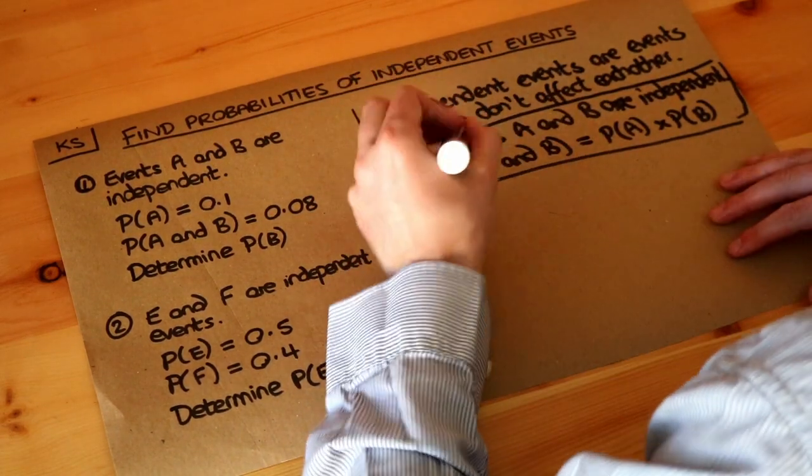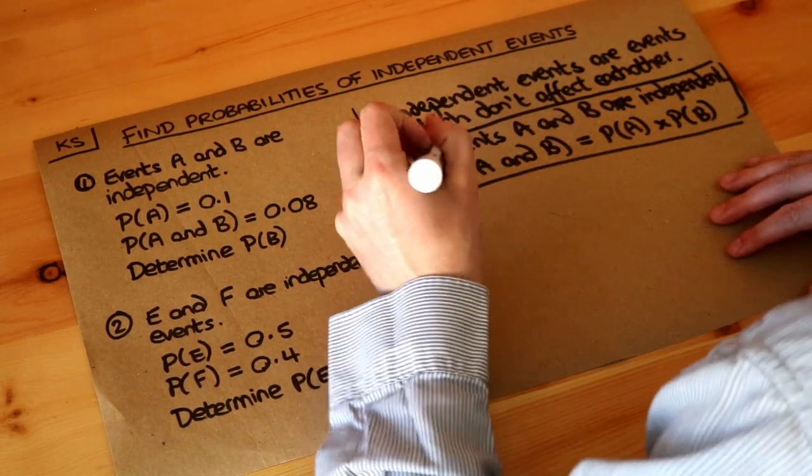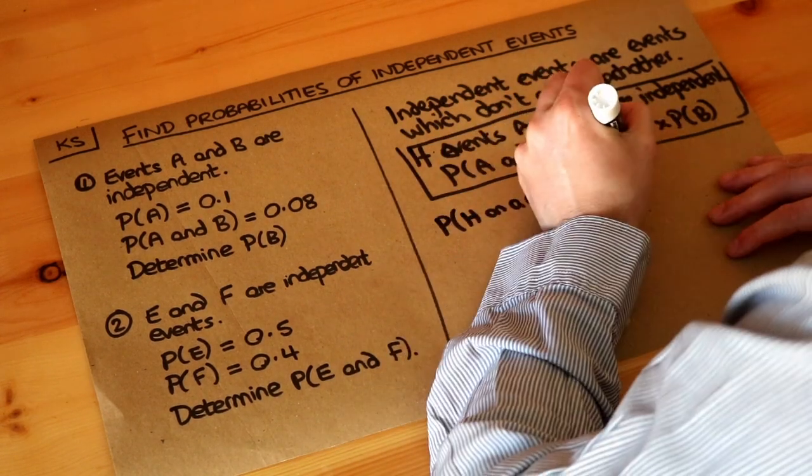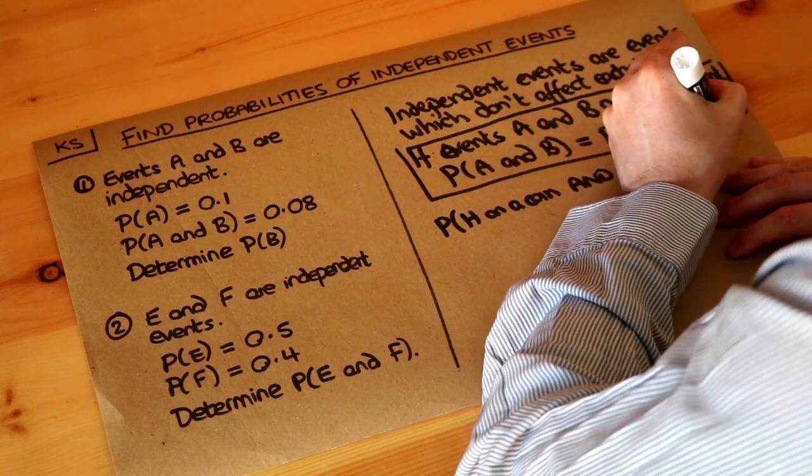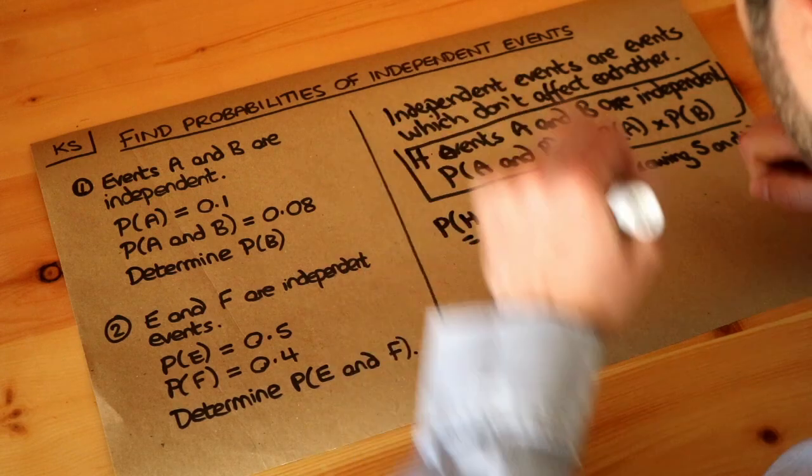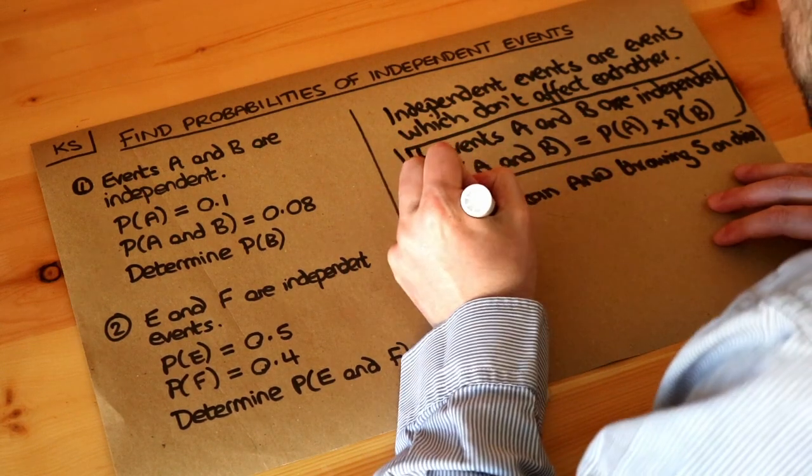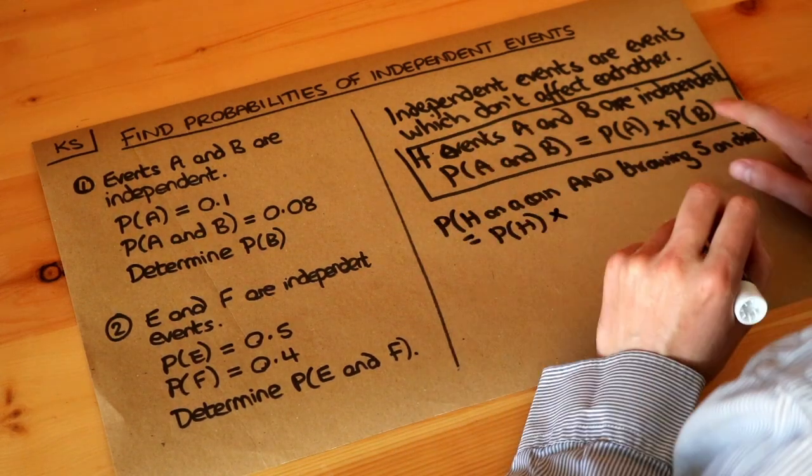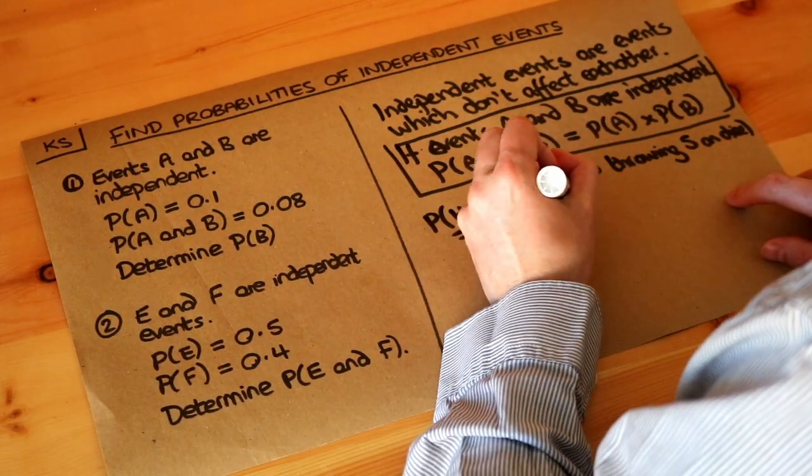So for example, if I want to find the probability of getting a head on a coin and throwing a five on a dice, then because the coin and the dice are independent of each other, they don't affect each other, we could just do the probability of getting a head on the coin multiplied by the probability of throwing the five on the dice.